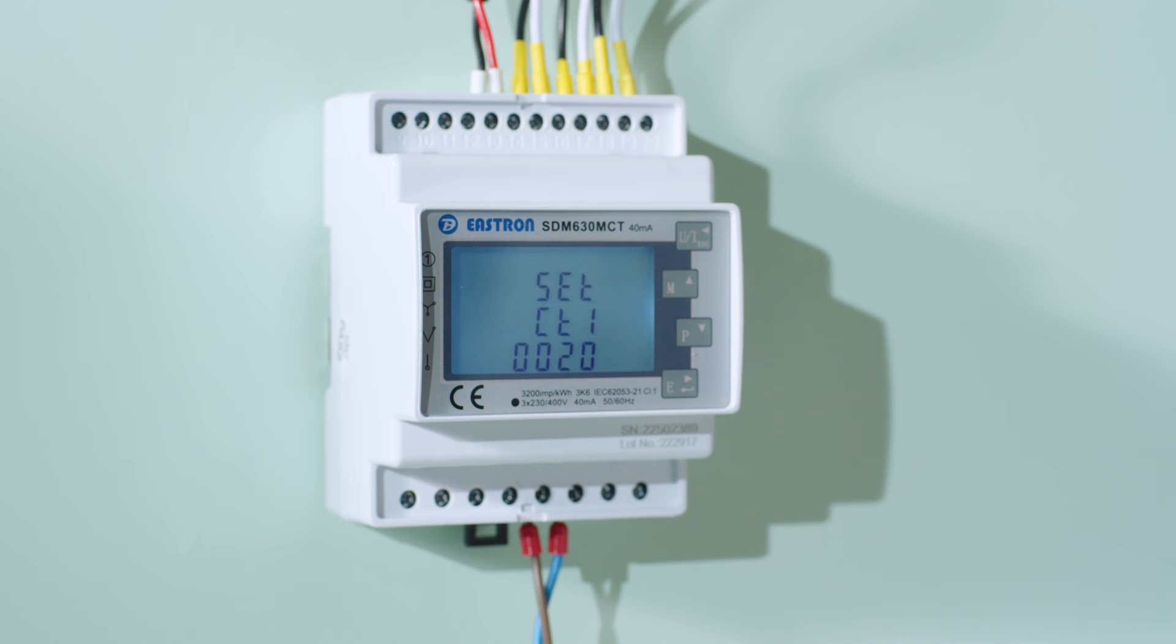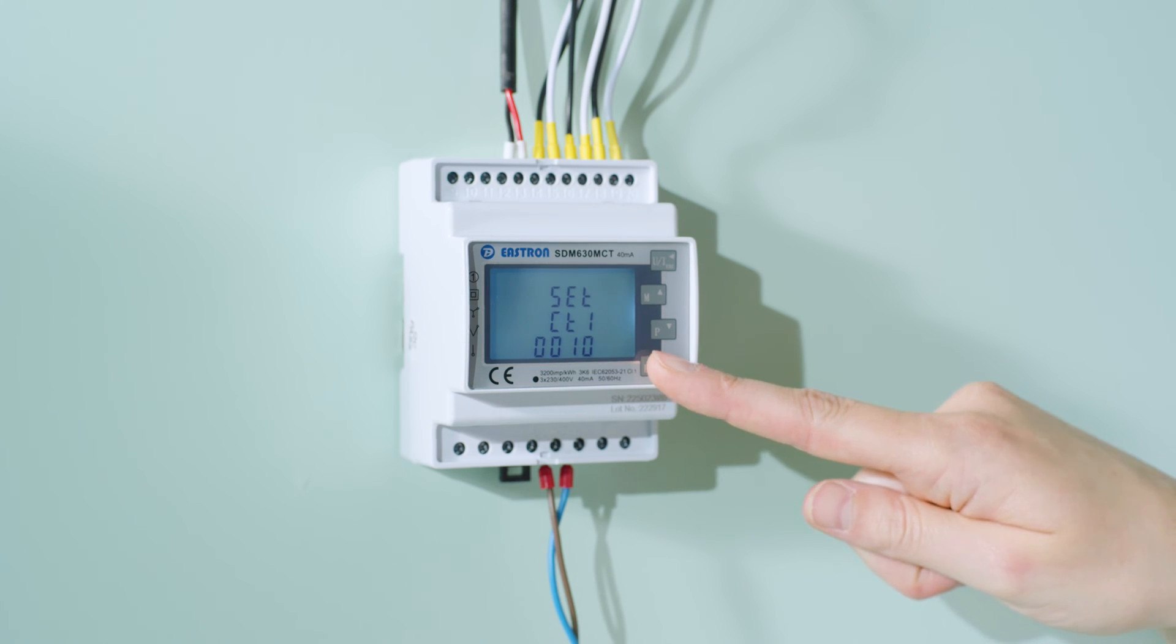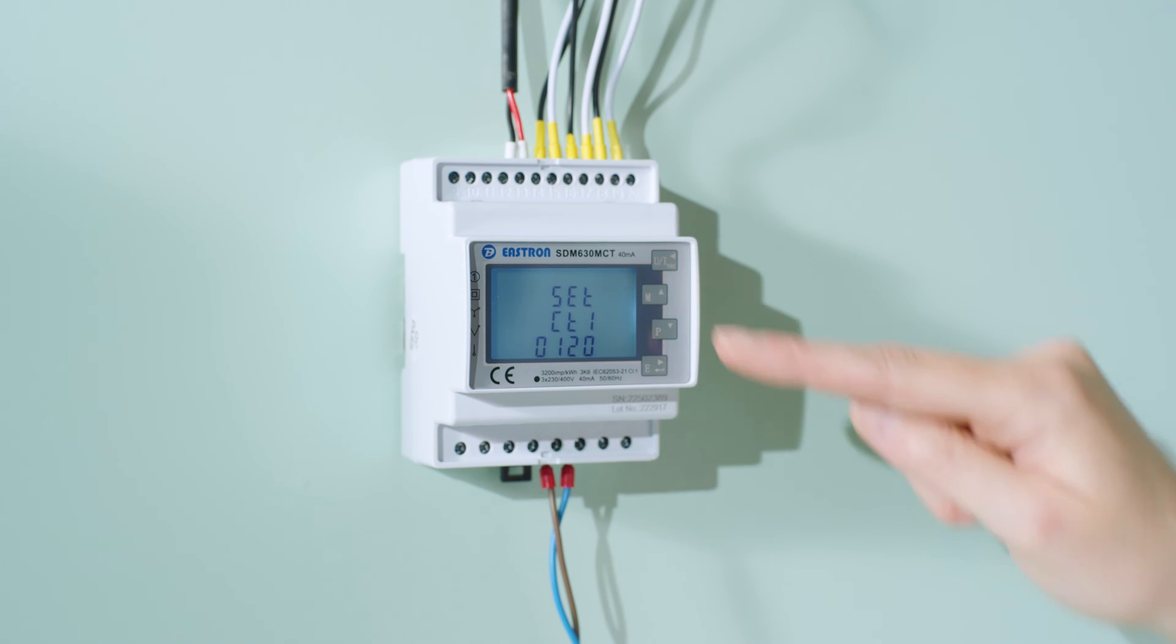Step five: Select Set CT1 and fill in the primary current corresponding to the clamps used. For the clamps we use, the primary value is 120 amps. Hold the E button until the first number starts flashing. Adjust the value using the up and down arrow buttons. Hold the E button until the display shows GOOD. The settings should be saved now. Press the UI button to exit the menu.